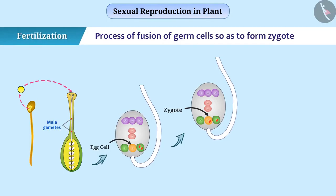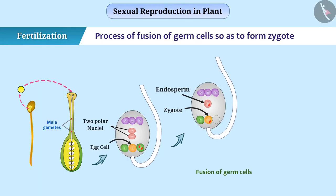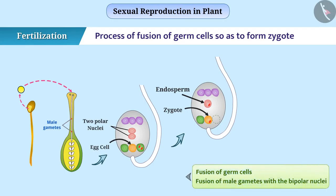Similarly, the second male gamete fuses with two polar nuclei to form an endosperm. Since there are two types of fusion in the embryo sac — fusion of germ cells, and fusion of the male gamete with the bipolar nuclei — such fertilization is called double fertilization.